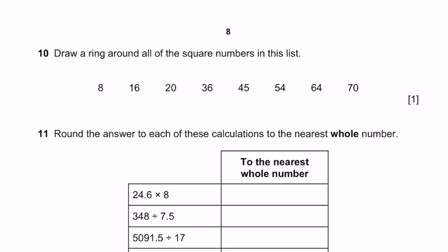Question 10. Draw a ring around all of the square numbers in this list. So the square numbers, we have 16, which is 4 squared. 36, which is 6 squared. 64, which is 8 squared. 4 squared, 6 squared, 8 squared. These 3 numbers are the only 3 square numbers. That's the answer.